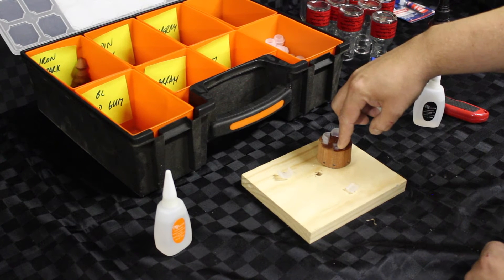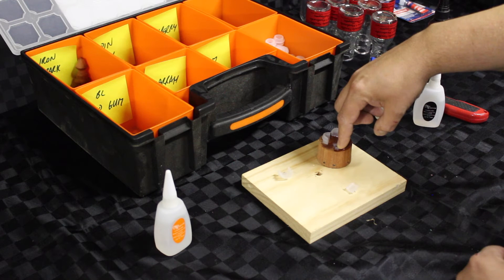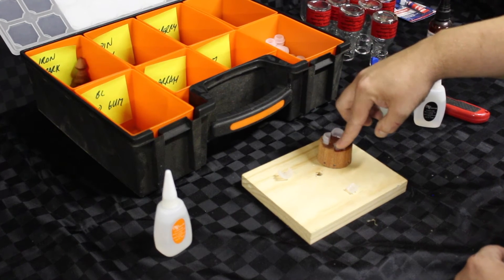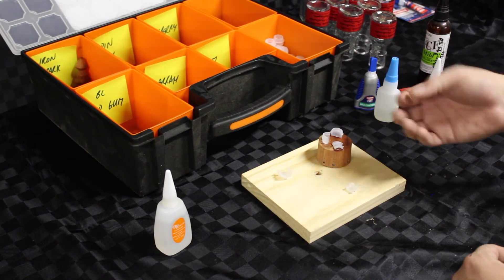You can tell when the CA goes off because often it'll start bubbling. So I can just see the thin one that I did most recently bubbling now. I'm going to say that's not a success for the thin one.